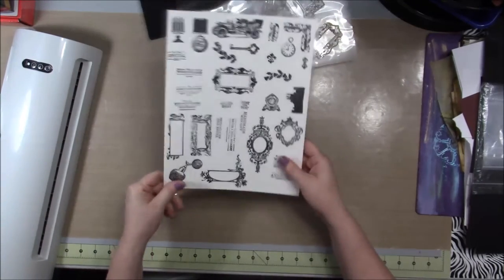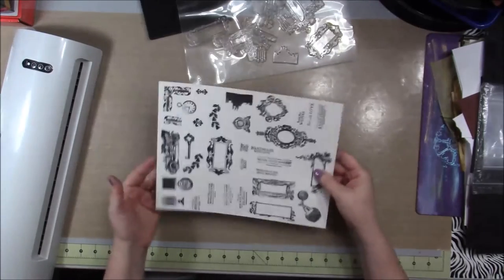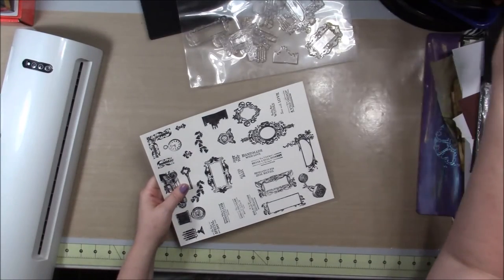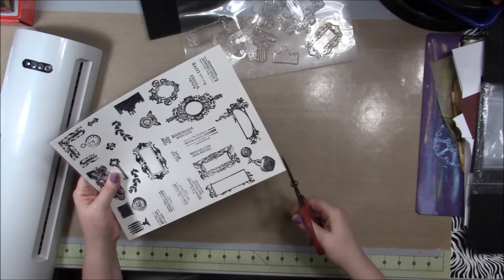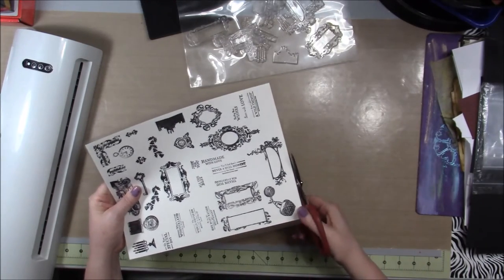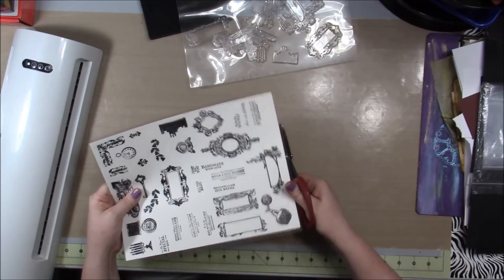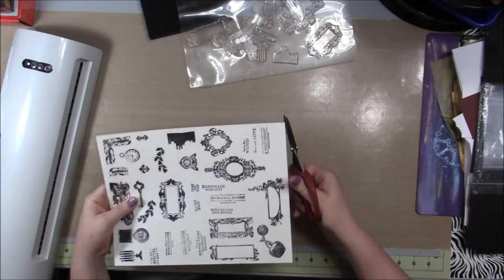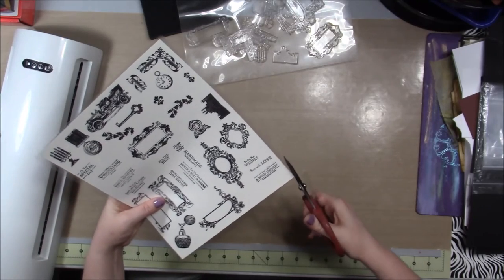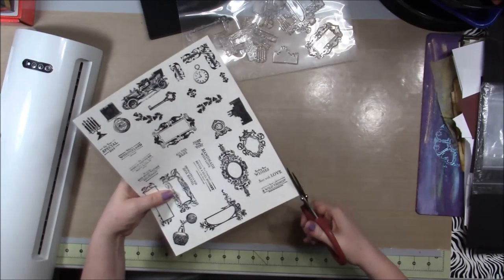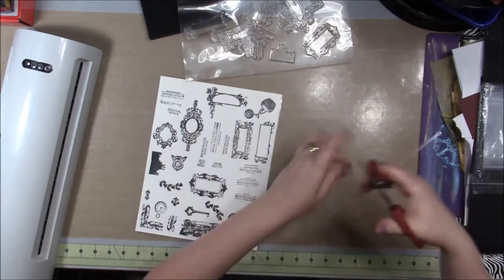All right, now that that's done, just let it cool off for just a minute. And then what I do is I go ahead and I trim it, trim some of the excess off just to make sure it fits in the page protector. And I do round my corners because I don't like sharp poking corners, just like that.